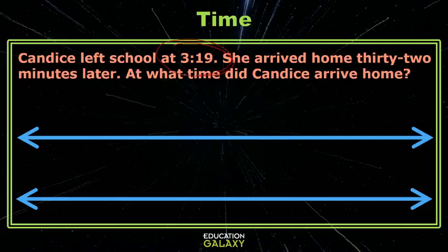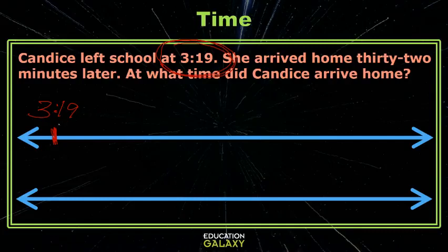So she's leaving at 3:19 — that's our start time. I'm going to call this spot right here 3:19. Now, if I'm arriving home 32 minutes later, how am I going to count 32 from 19 minutes?